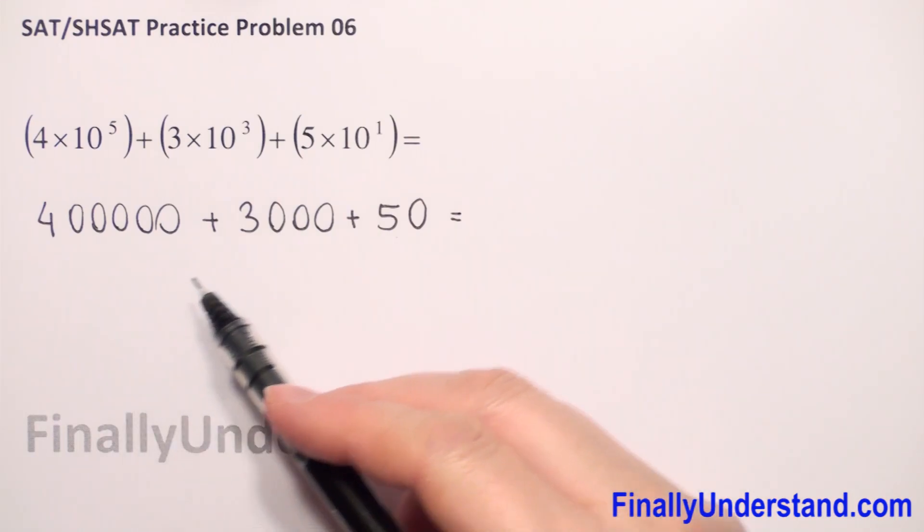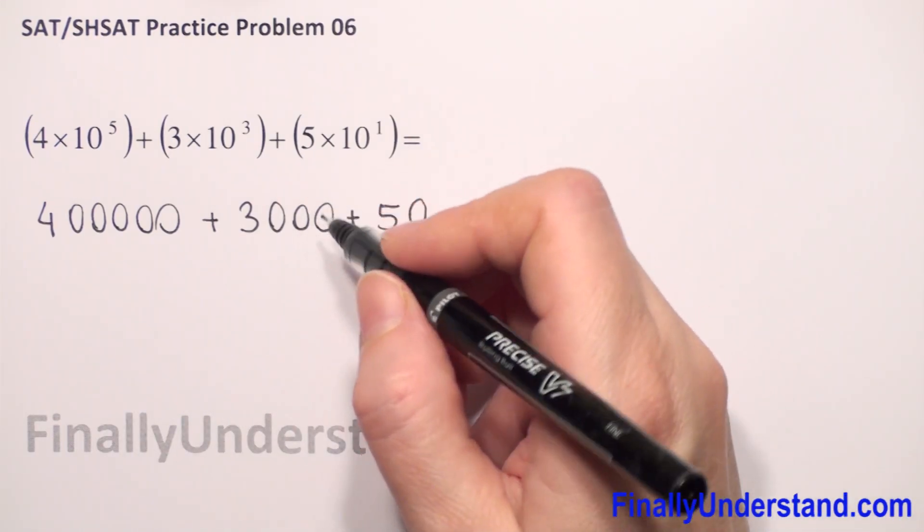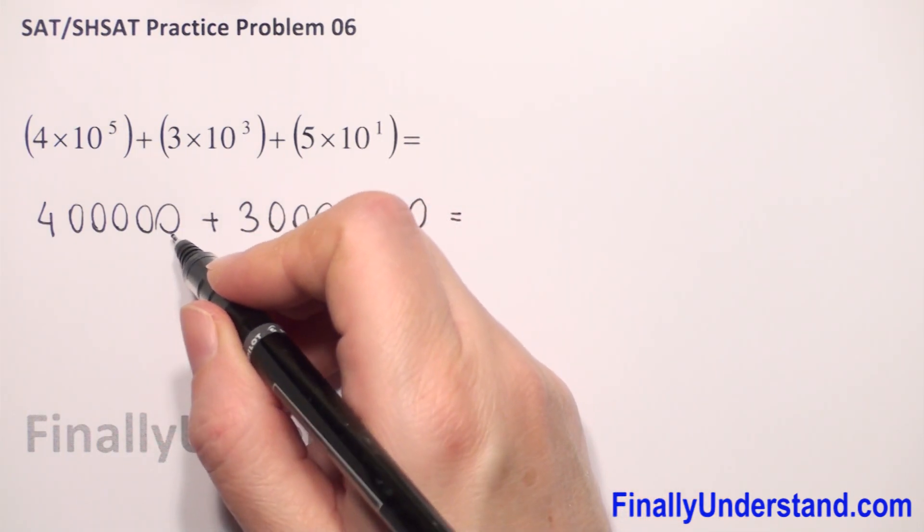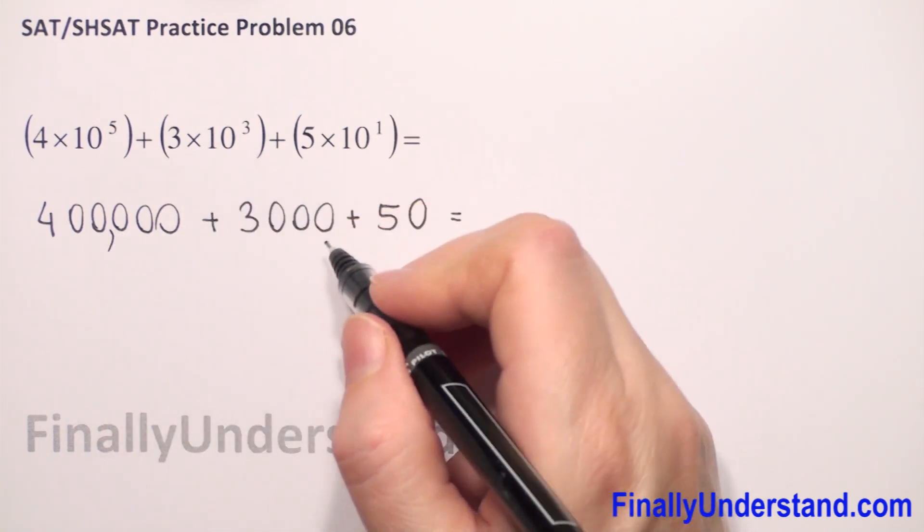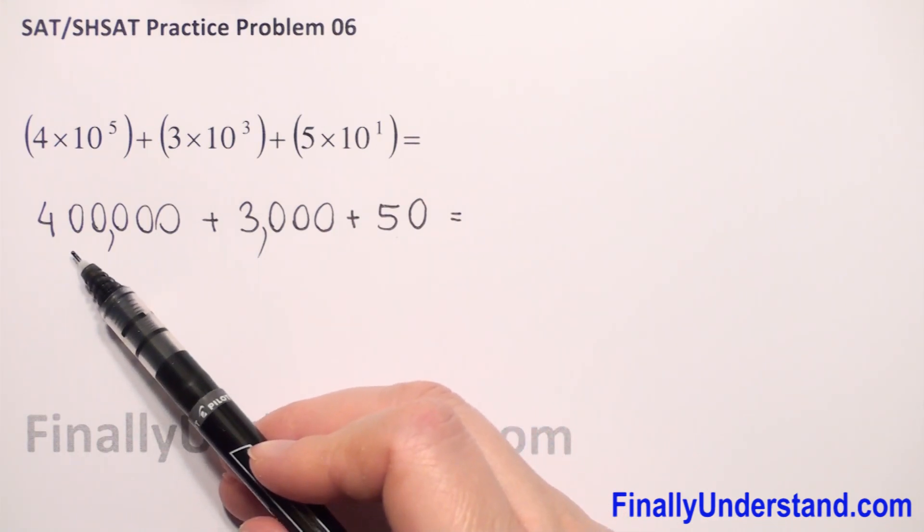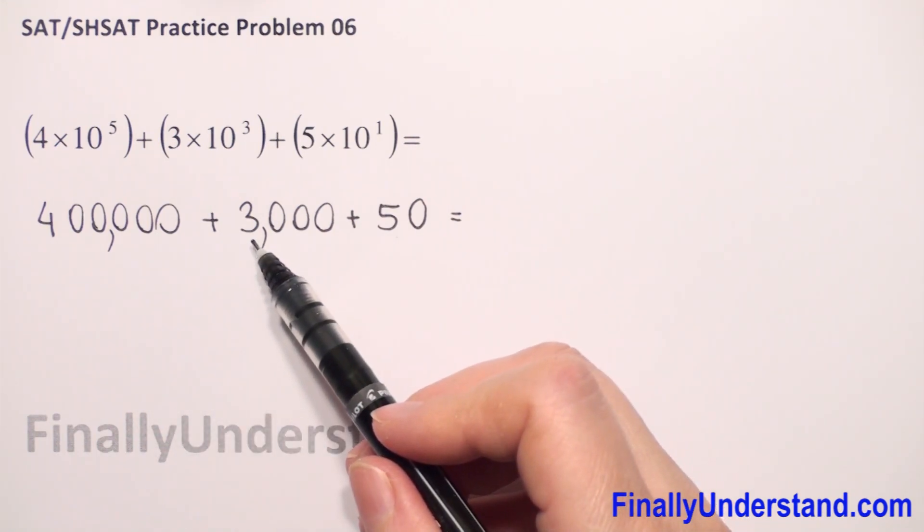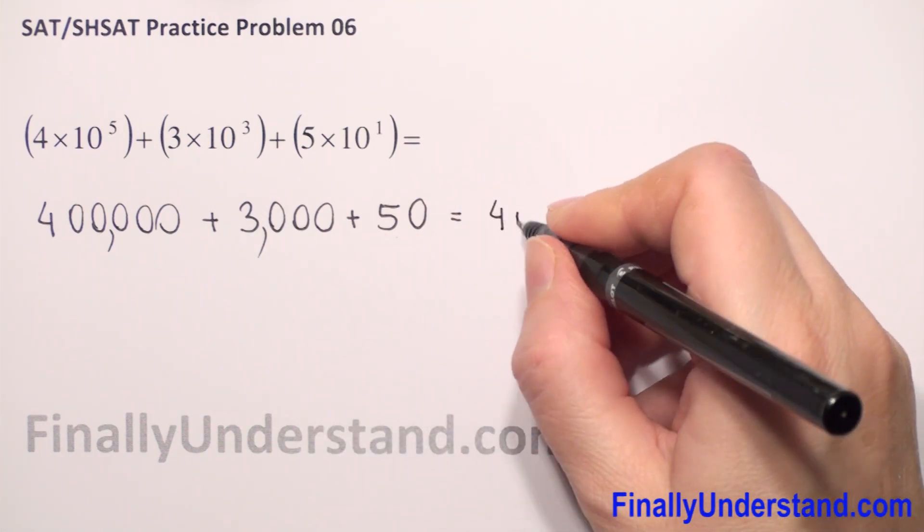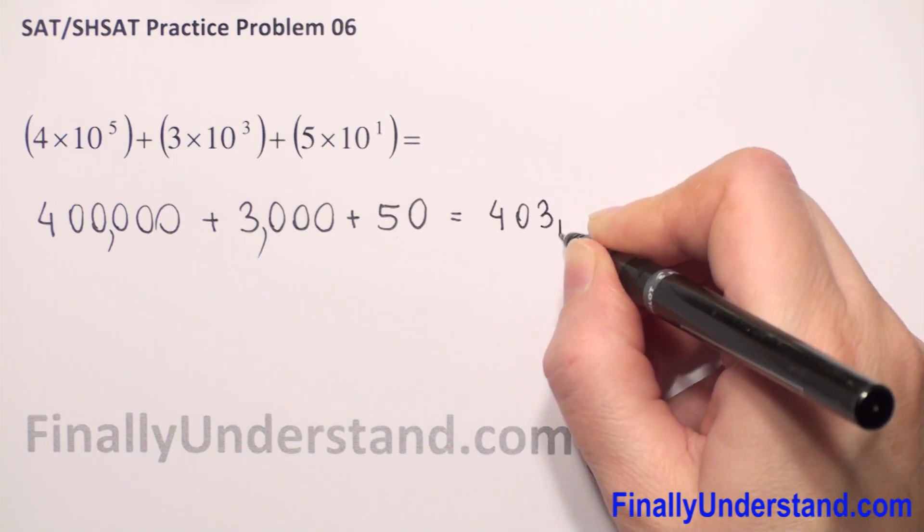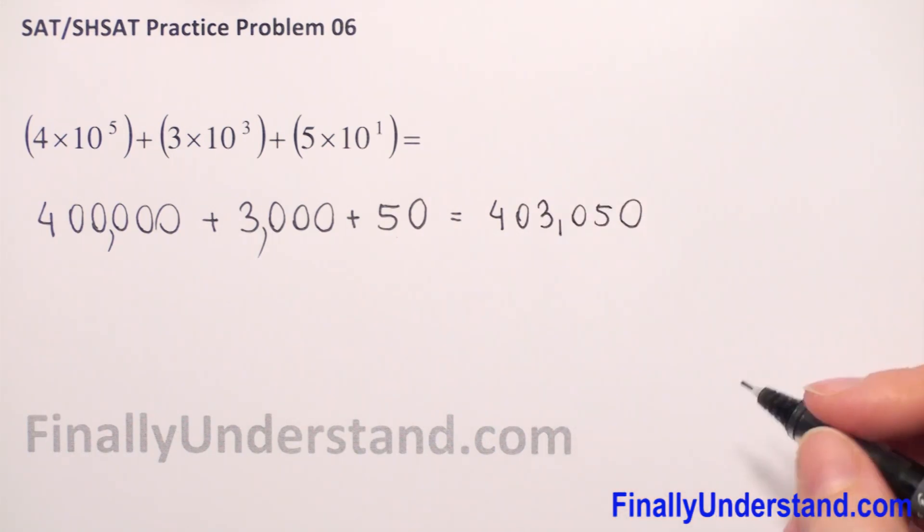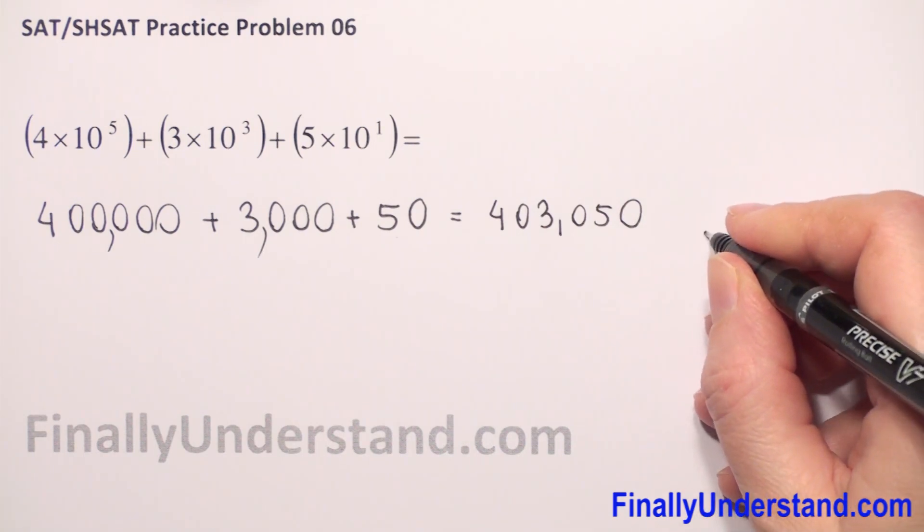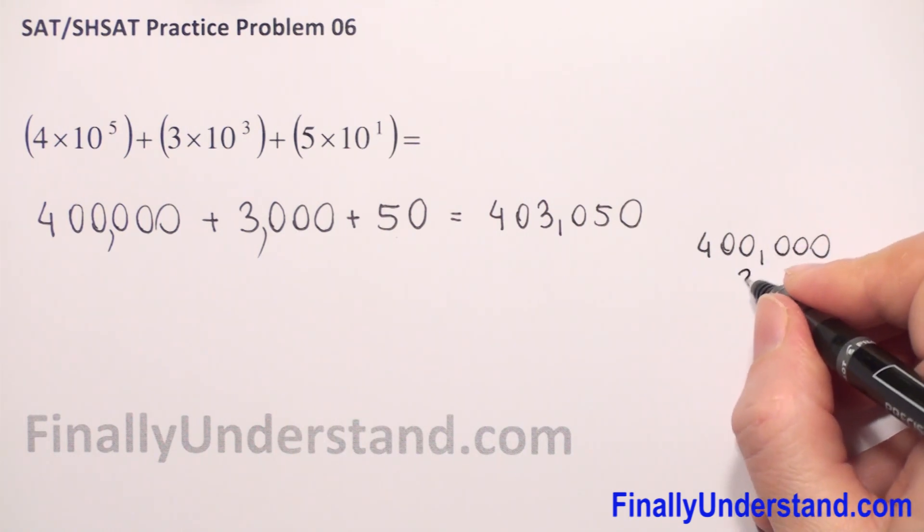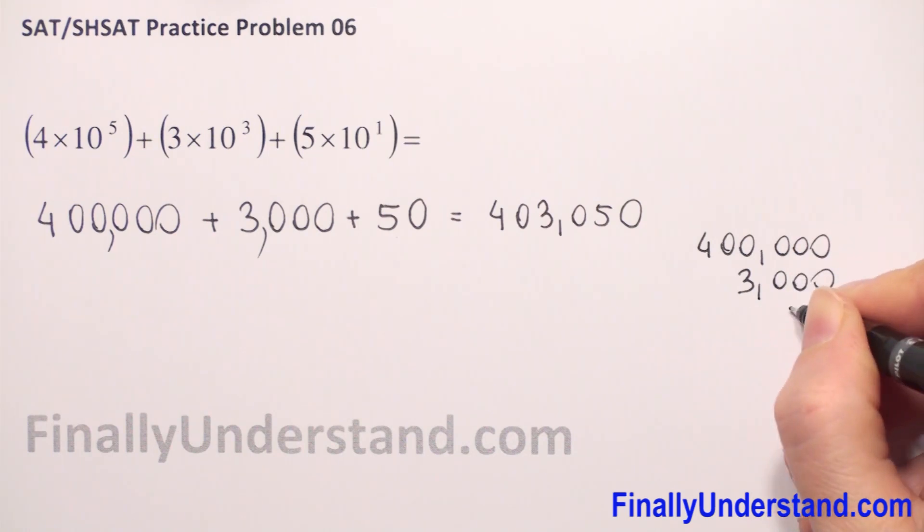If you don't know how to do this, you can always add commas. We just count from left 3 digits: 1, 2, 3 and we write comma. 1, 2, 3 and we write comma. So we have 400,000 plus 3,000 plus 50.